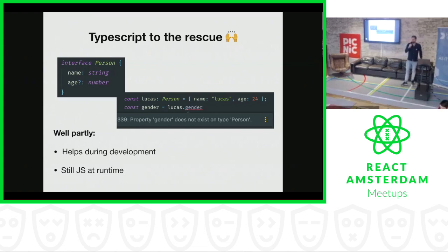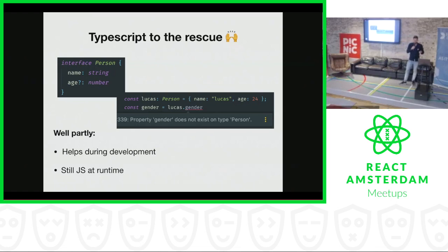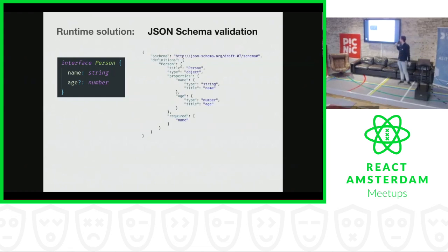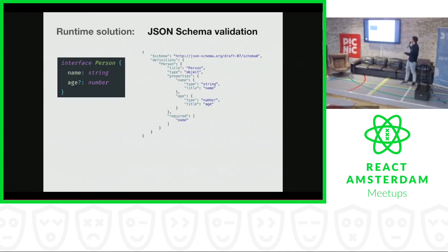So we've been looking at a few solutions to check our data from the API during runtime as well, and I will now walk through them. There are two, and I'll tell some positives and some negatives and where we actually went. The first solution is called JSON schema validation. For JSON schema validation, you need a JSON schema, which is shown on the right. A JSON schema represents the interface — it's nothing more than a definition of how your JSON should look like.